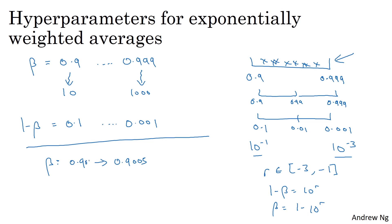So if beta goes from 0.9 to 0.9005, it's no big deal. This is hardly any change in your results. But if beta goes from 0.999 to 0.9995, this will have a huge impact on exactly what your algorithm is doing, right? So in both of these cases, it's averaging over roughly 10 values. But here, it's gone from an exponentially weighted average over about 1,000, the last 1,000 examples to now the last 2,000 examples. And it's because of that formula we had 1 over 1 minus beta. This is very sensitive to small changes in beta when beta is close to 1. So what this whole sampling process does is it causes you to sample more densely in the regime of when beta is close to 1.